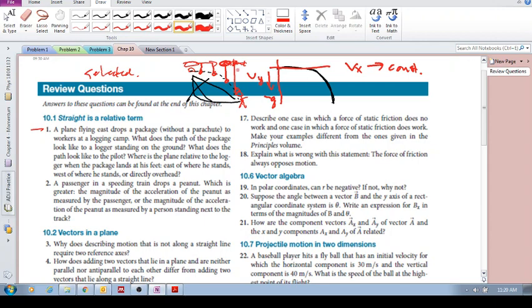Because that horizontal velocity is constant and if the plane is constant, then they move together along the horizontal direction. Where is the plane relative to the logger when the package lands at his feet? Is it east, east, west, or directly overhead? What's the answer?